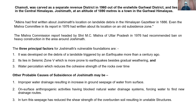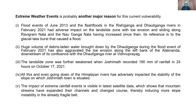Joshimat's foundations are so vulnerable due to three principal factors. First, it was developed on the debris of a landslide triggered by an earthquake more than a century ago. Second, it lies in seismic zone 5, which is more prone to earthquakes. Third, gradual weathering and water percolation reduces the cohesive strength of rocks over time. Improper water drainage has resulted in increased ground seepage from surface and through anthropogenic activities, blocking natural drainage systems and forcing water to find new routes, which has reduced the shear strength of the overburdening soil, resulting in unstable structures.